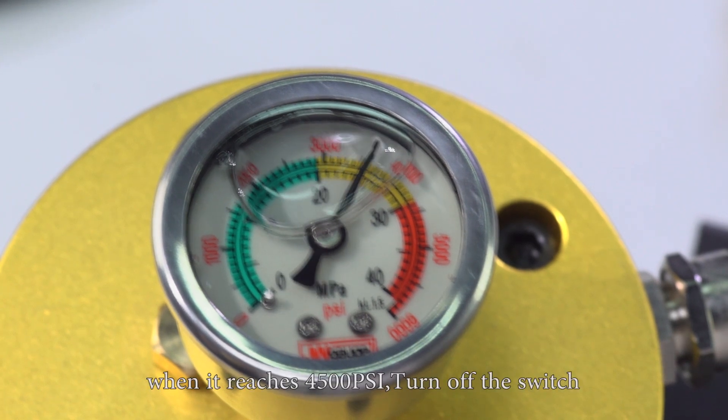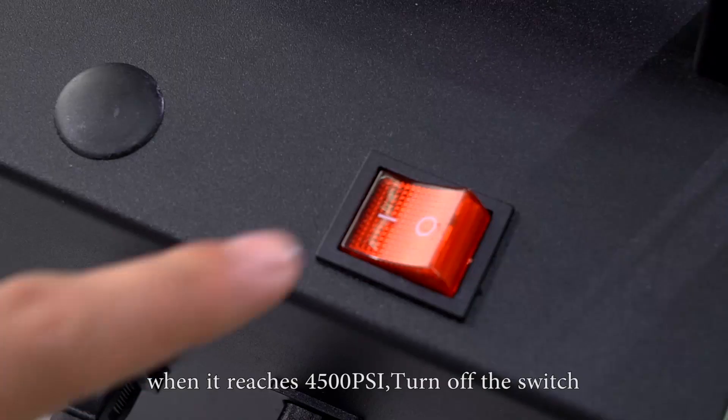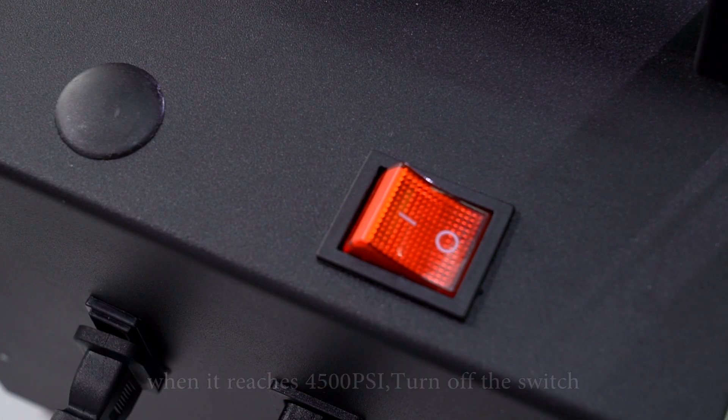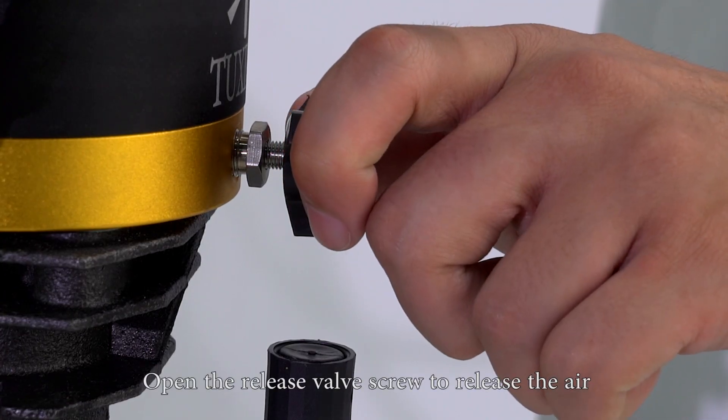The air is rising as expected. When it reaches 4500 psi, turn off the switch. Open the release valve screw to release the air.